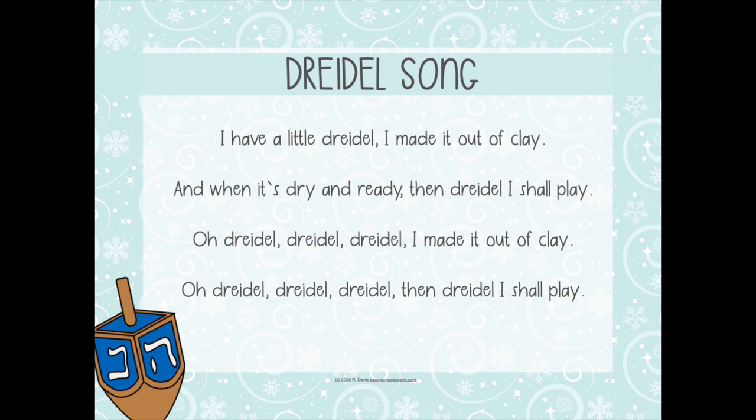I had a little dreidel, I made it out of clay. And when it's dry and ready, then dreidel I shall play. Oh dreidel, dreidel, dreidel, I made it out of clay. Oh dreidel, dreidel, dreidel, then dreidel I shall play. It has multiple verses, but we usually just do the first verse with my third graders, and we add a few little actions to help us out. So 'I had a little dreidel' — we pretend like we're playing the dreidel, which is a spinning top game. 'I made it out of clay' — that's us making it out of clay. Not super fancy actions, but it's something for them to do while we're singing.